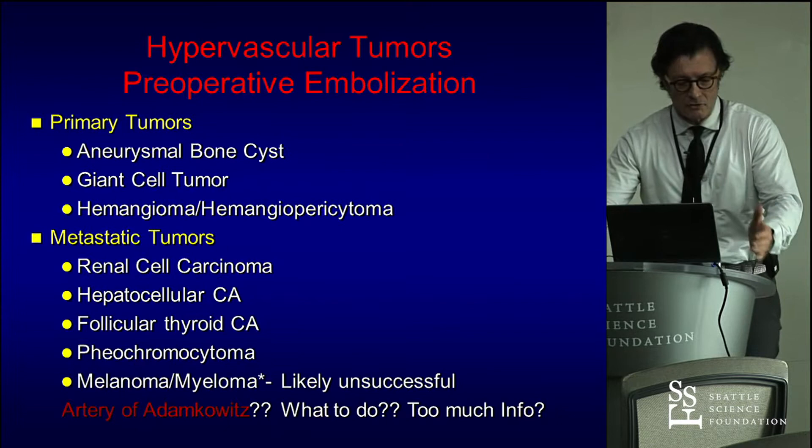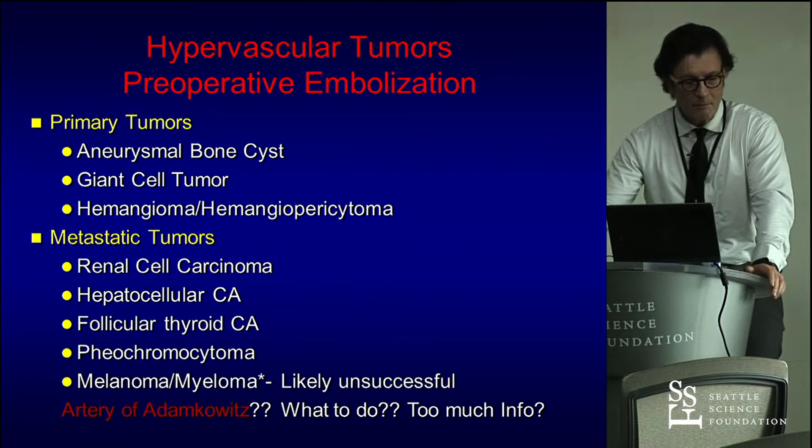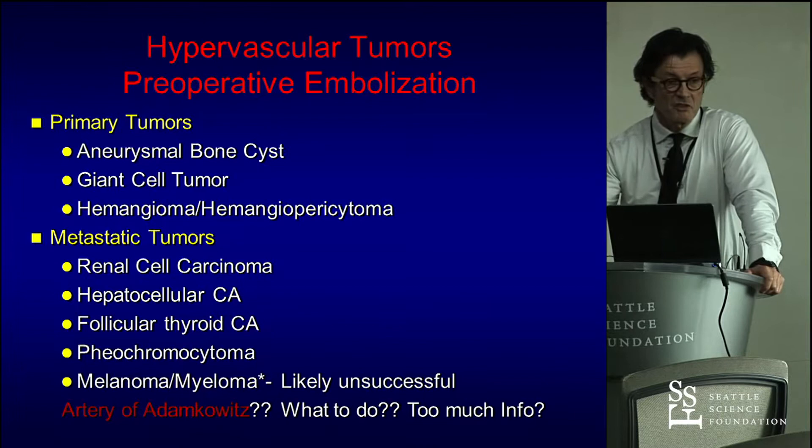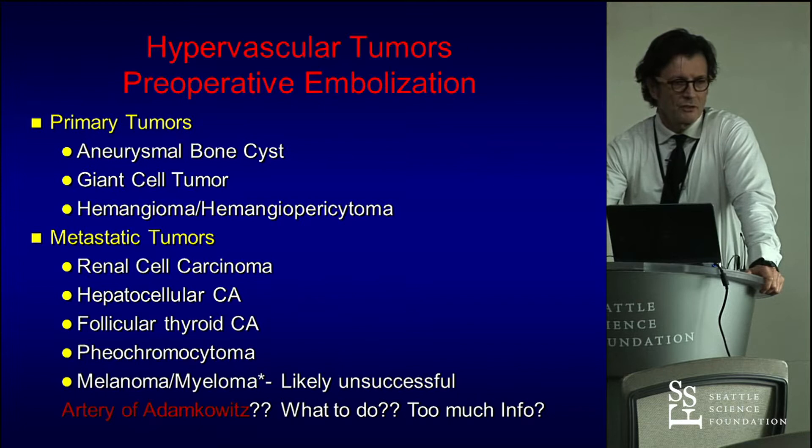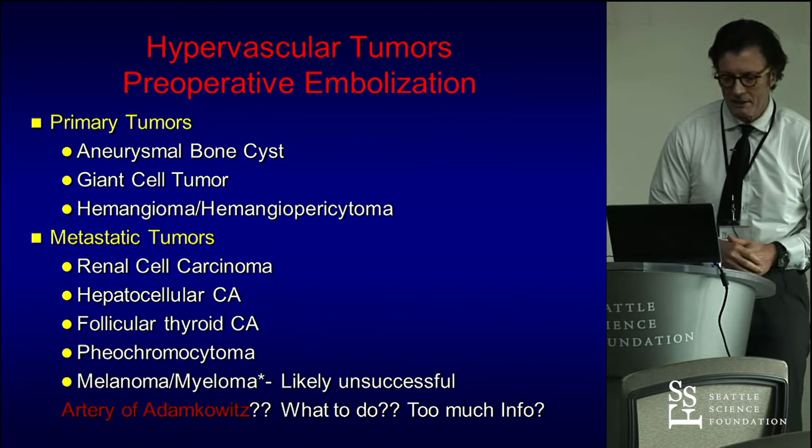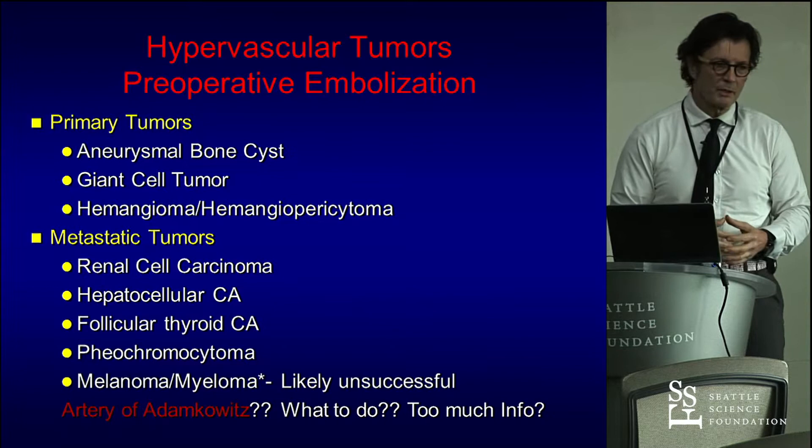Here is a laundry list of highly vascular tumors: renal cell, liver/hepatocellular, thyroid, pheochromocytomas, melanomas, multiple myelomas. Multiple myeloma is a very bloody tumor, and the problem is you can't embolize it — it's a bone tumor. You go into that bone and it just keeps bleeding, and there's not much you can do about it. Embolization is likely unsuccessful for myeloma.